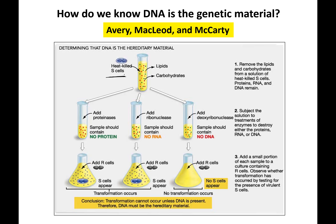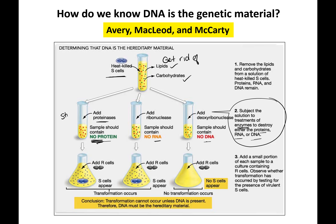They took the heat-killed smooth bacteria just like Griffith did, and got rid of fats and carbohydrates since nobody thought those were genetic material. The question was whether it was protein, RNA, or DNA. They had enzymes to chew up each one. When they added an enzyme that eliminated protein, leaving only RNA and DNA, they did Griffith's mixing experiment and got the S strain back — transformation still happened.